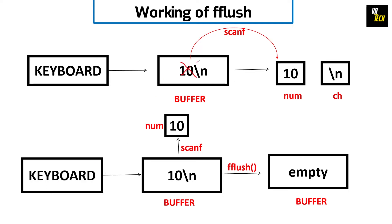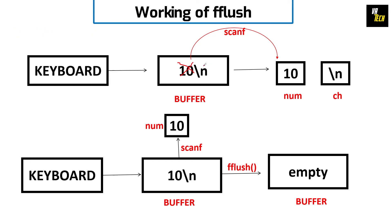Now the 10 is cleared from the buffer, but the buffer is not empty yet — it contains the Enter that you had pressed after the 10. Enter is also a character; it has an ASCII value, remember that. So when the second scanf is encountered, it takes the Enter and assigns it to the ch variable. That's how it happens.